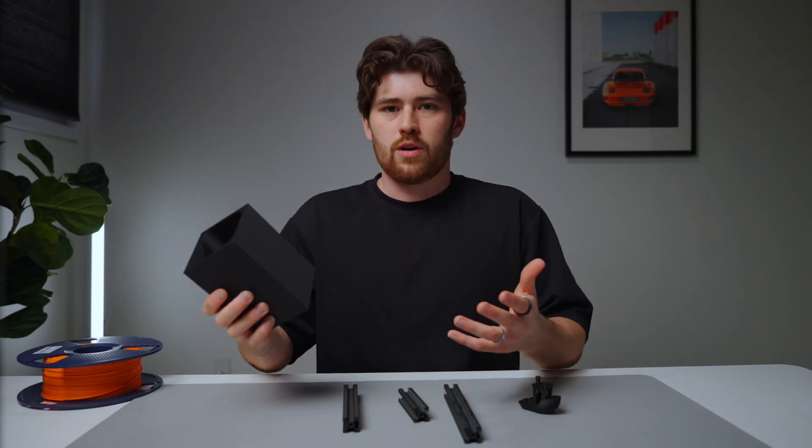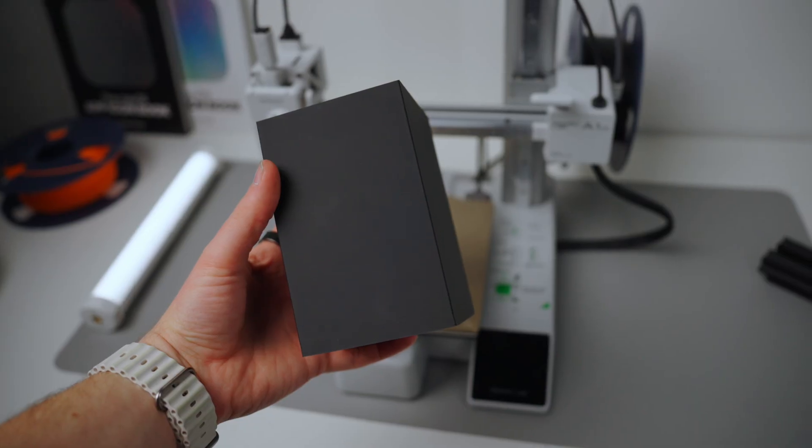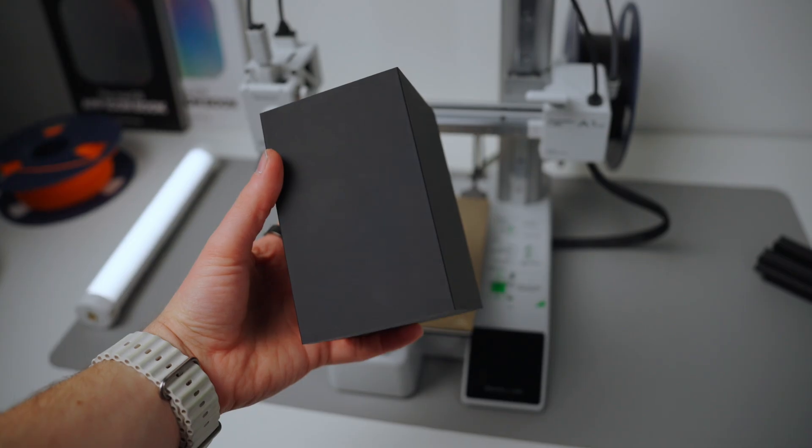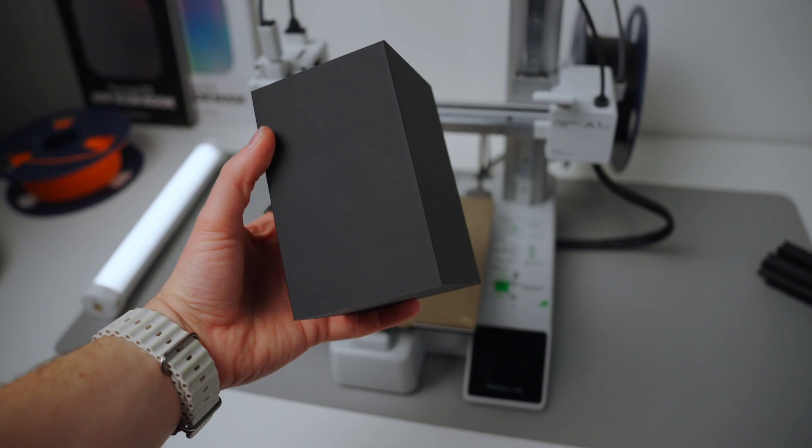Again, it's a pretty large print for such a small print plate. This is the only one with a visible layer line. And that's because right where the layer line is, is actually where the solid infill stops happening. And then it starts doing actual gyroid infill up top.